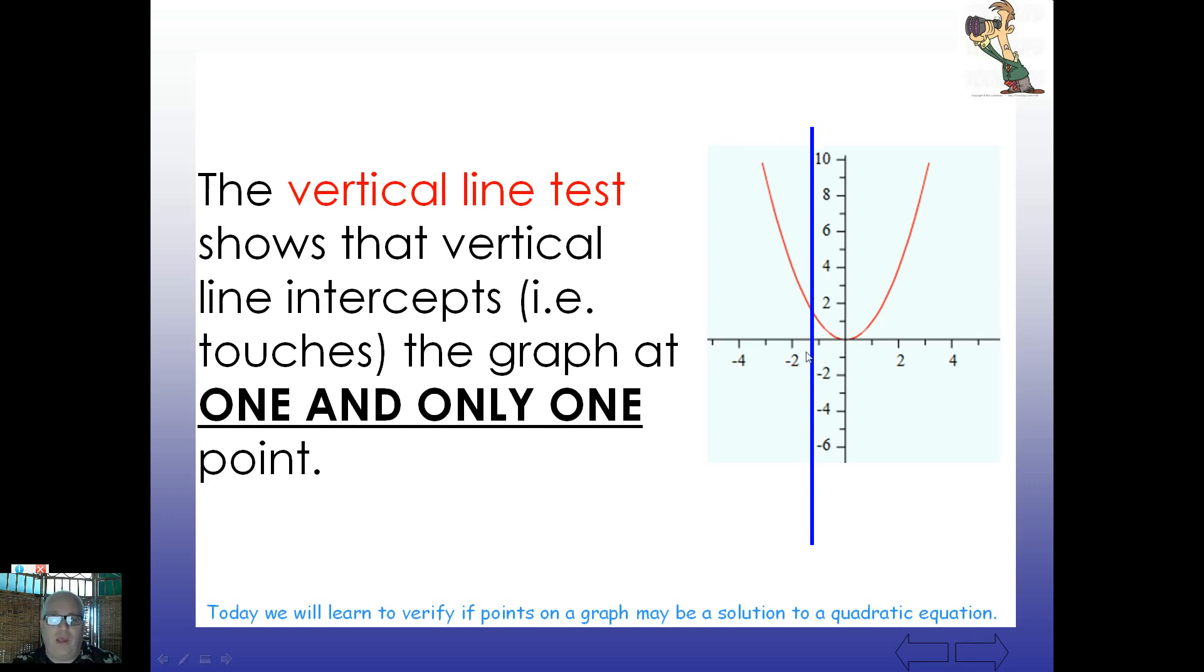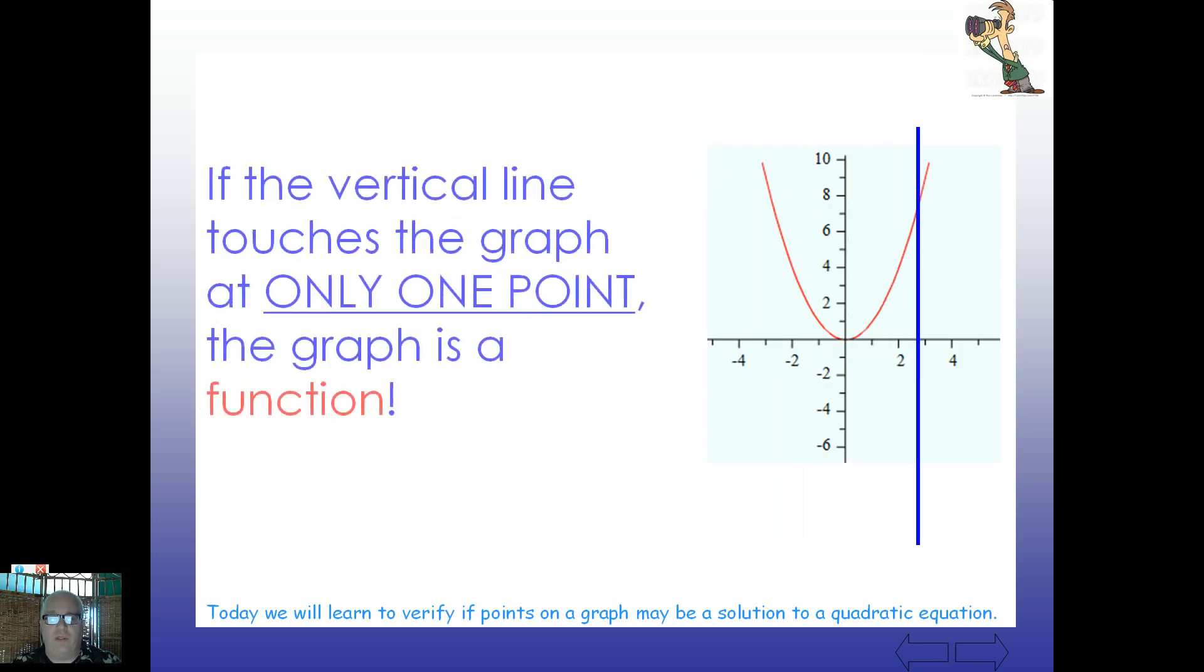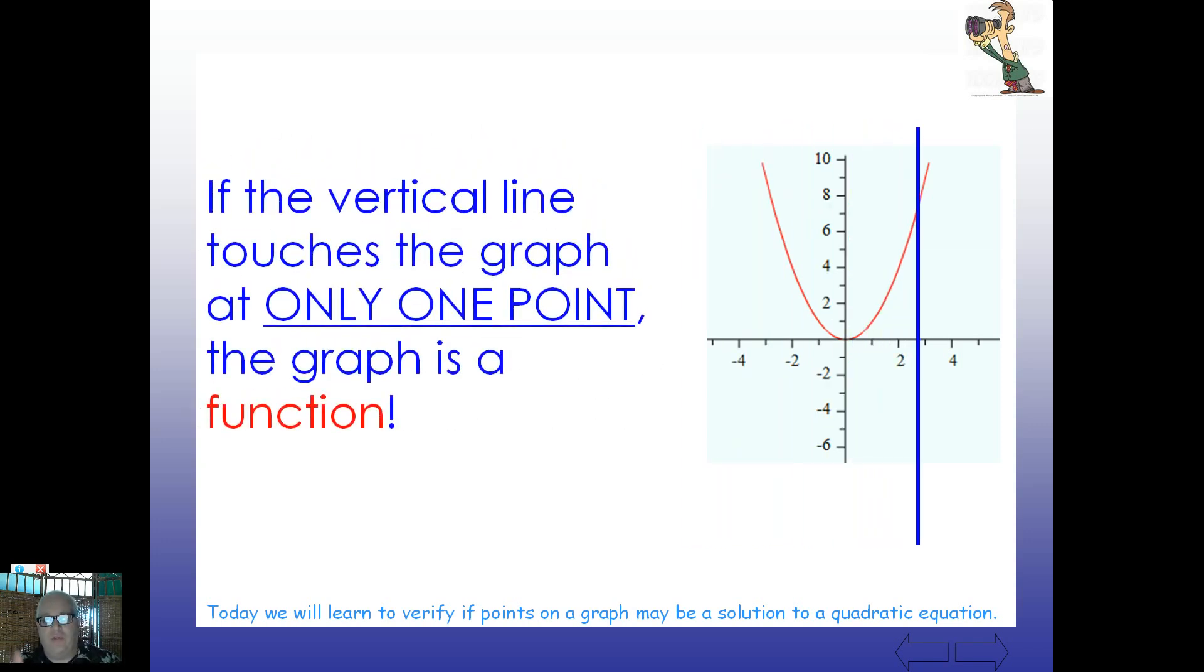If this vertical line, any vertical line that you draw through a graph, and you pass it over the graph, left to right, right to left, if it touches the graph one time only, then we call this a function. So notice it passes through. Even on this side. It does only touch the graph at one place. So this has a, this fits the definition of what we call a function.